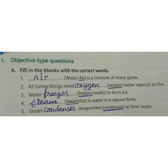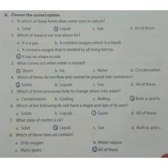Now Section B: Choose the correct option. Question 1: In which of these forms does water exist in nature? Option A: Solid. Option B: Liquid. Option C: Gas. Option D: All of these. The answer is D — All of these.